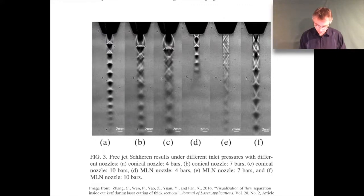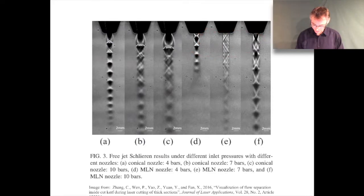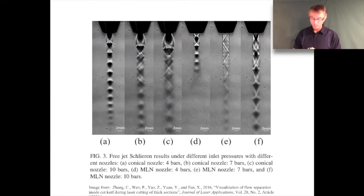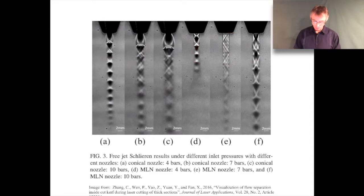I want to talk about that expansion of the gas — you'll see another picture of it later in the lecture. With the converging-diverging nozzles, you also see neat diamond-shaped patterns called Mach diamonds or shock diamonds. These phenomena occur due to the compressibility of the gas: you get regions of shock waves and expansion fans, and the way they interact with the atmosphere produces these interesting patterns.